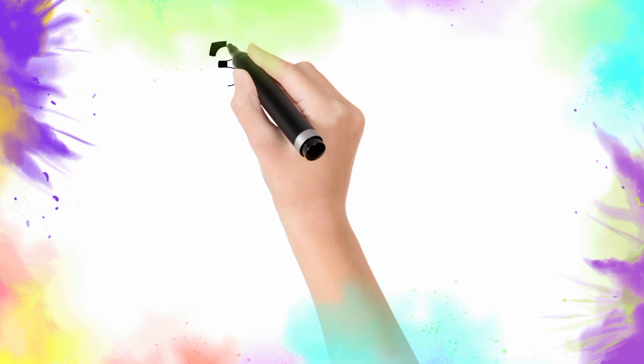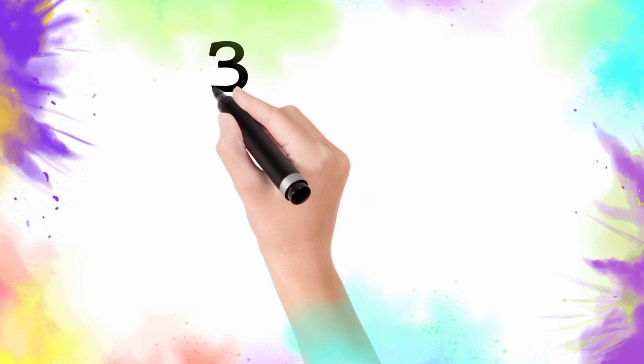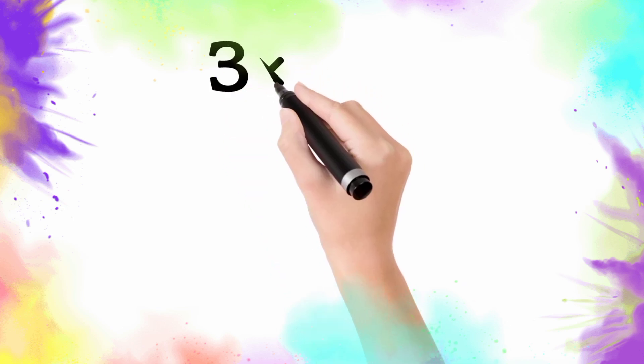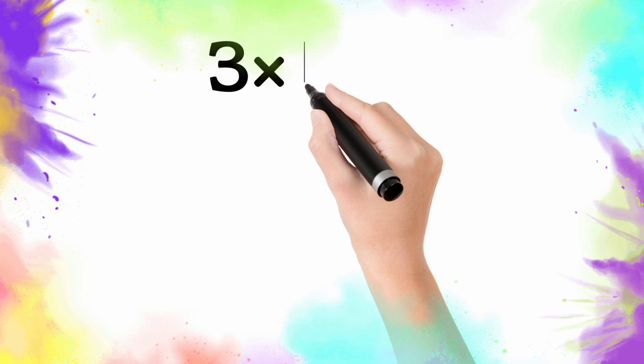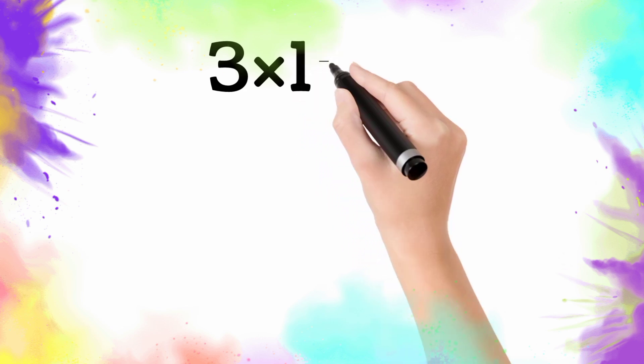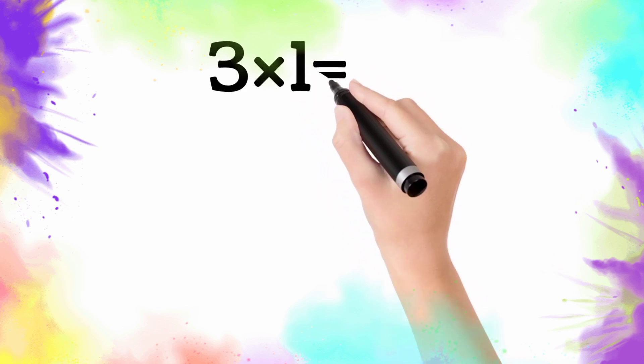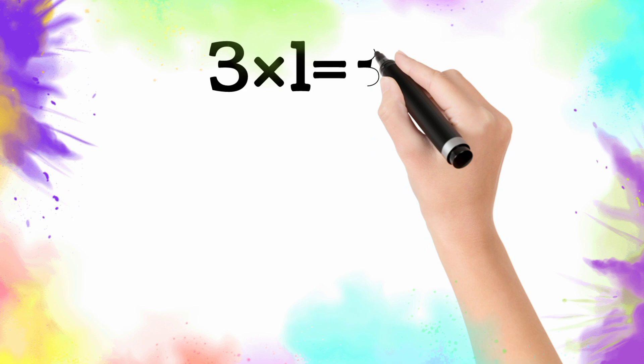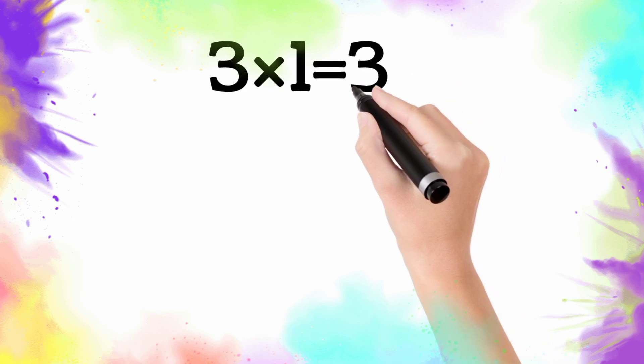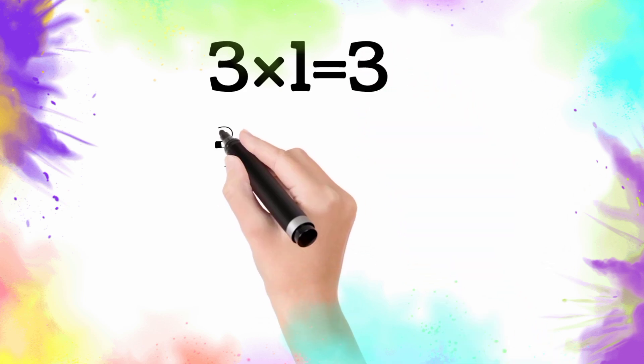So let's go. Three multiply by one is equal three. Three one, the three.